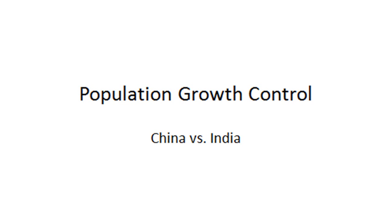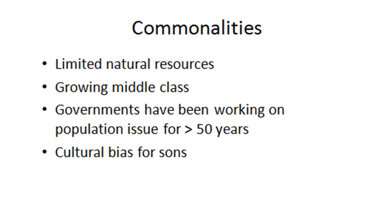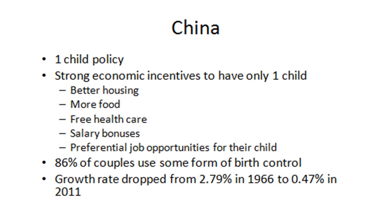We'll focus on China and India — two countries whose populations have topped one billion — and the methods they've used to reduce population growth, with varying success. We'll look at their successes and failures. Both countries have limited natural resources and are seeing a dramatic increase in their middle class. Both governments have been working on this population issue for over 50 years. And in both countries there is a cultural bias for sons over daughters.